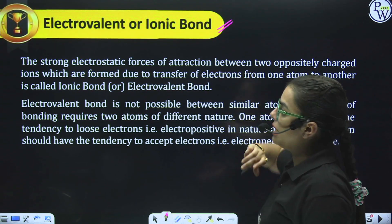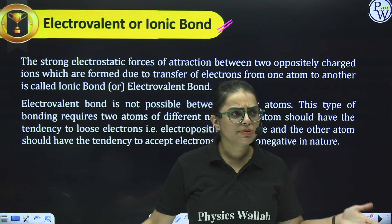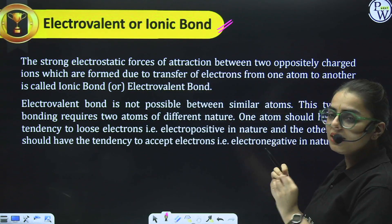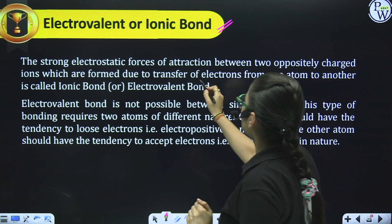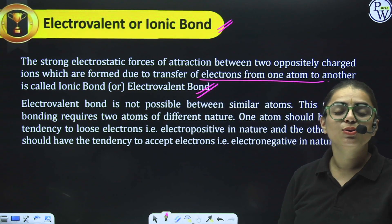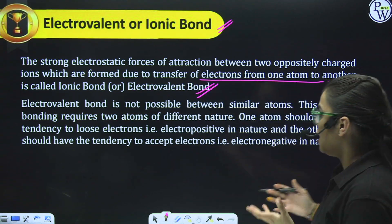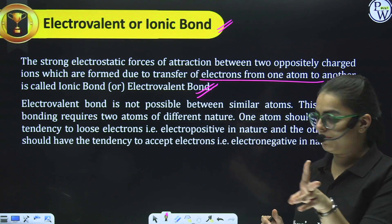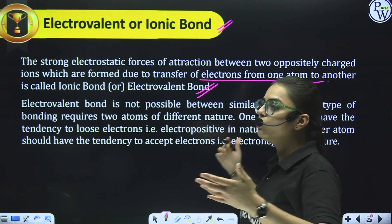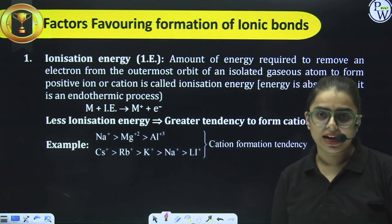Now let's start with the ionic bond — the electrovalent bond. An ionic bond is when there is a strong electrostatic force of attraction between two oppositely charged ions, formed due to transfer of electrons from one atom to another. It is also referred to as the electrovalent bond. Electrovalent bond is not possible between similar atoms, because this type of bond requires one atom with a tendency to lose electrons and another with a tendency to accept.